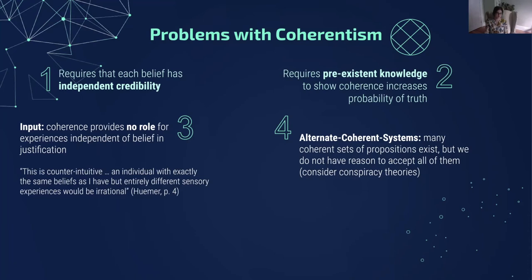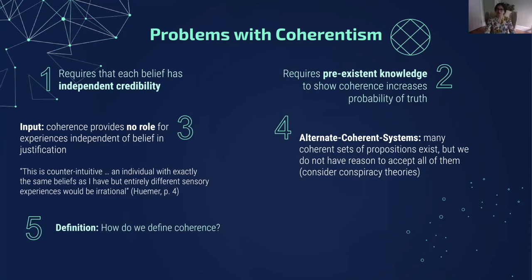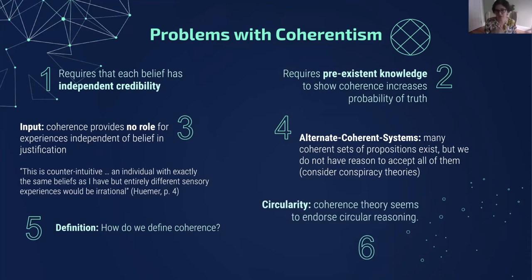It's not great to be a conspiracy theorist. Fifth problem with coherentism, which I'll discuss in more detail in a minute: how do we define coherence? I've given some reasons why beliefs are counted as coherent, but that's not a definition of coherence, so we need to define it. The sixth problem with coherentism is circularity — coherence theory seems to endorse circular reasoning. That seems really serious. We'll look at some responses to this accusation in a minute.